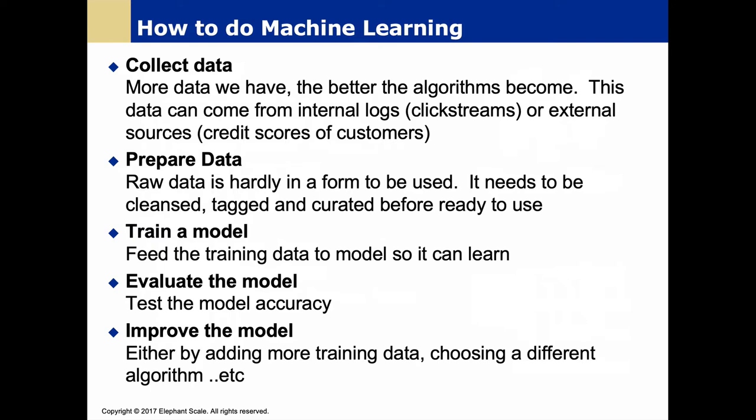How do we do machine learning? First we get data — typically the more data the better — from log files, click streams, and external sources like customer credit scores. Then we prepare the data, which is crucial to success — data quality can be extremely important, even more so than data quantity. Then we train the model by feeding that data so it can learn. We evaluate our model's metrics like accuracy. Then normally we need to improve our model by adding more data or choosing different algorithms.